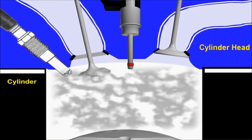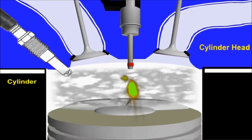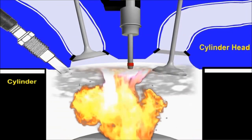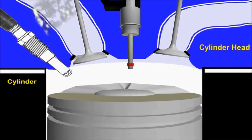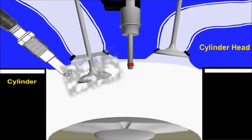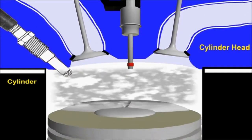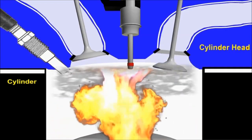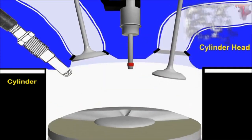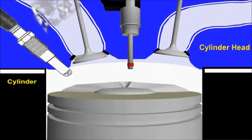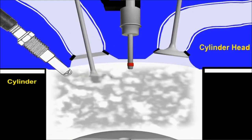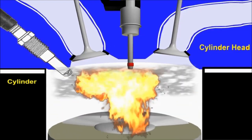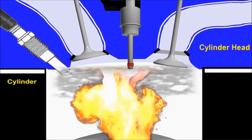Then, during the compression stroke the ECM commands a dual injection event for a final burn cycle. The dual injection makes the mixture richer and therefore helps to propagate the rest of the combustion. This feature of GDI is part of the different modes of operation covered in detail later on.